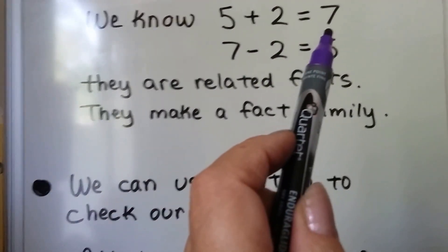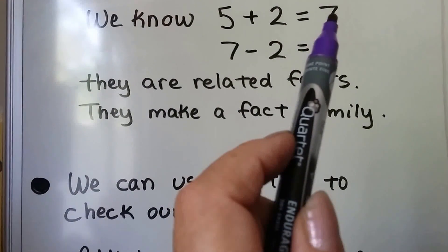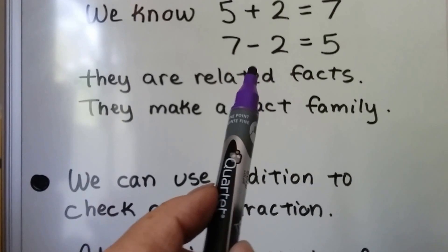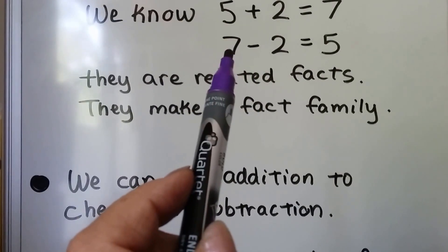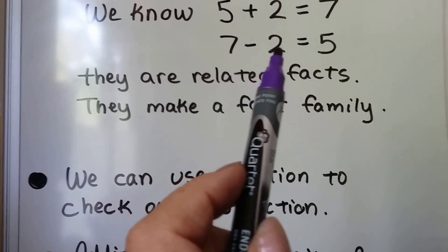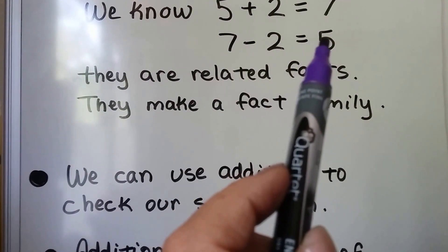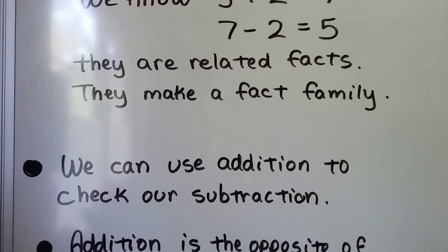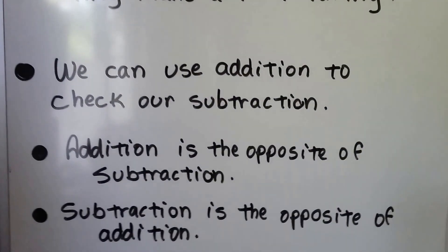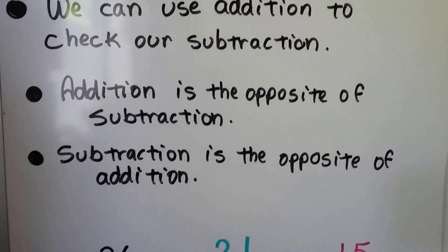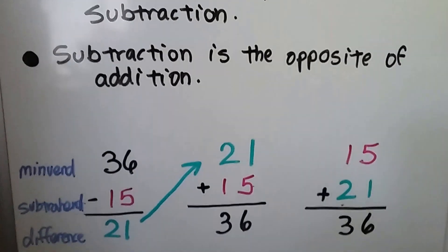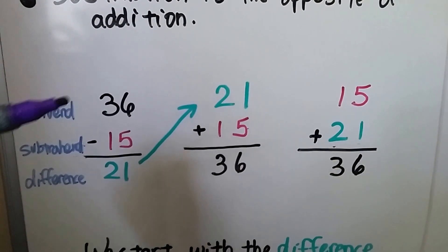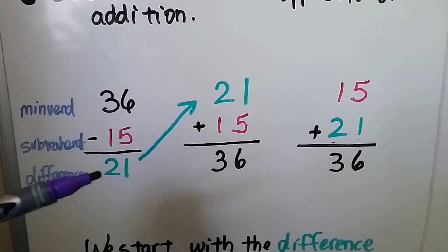This is an addition sentence. If we do 7 minus 2, it'll equal 5. And if we check our subtraction — 7 minus 2 equals 5 — by adding the difference and the subtrahend, it should equal that addend. Addition is the opposite of subtraction and subtraction is the opposite of addition. So this larger number is the minuend, this is the subtrahend, and this is the difference.